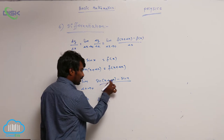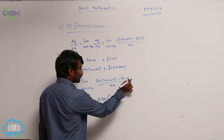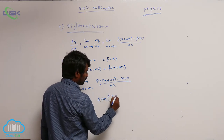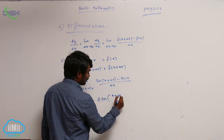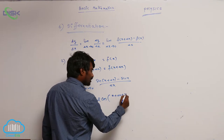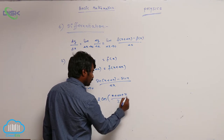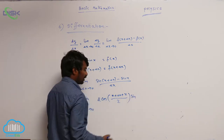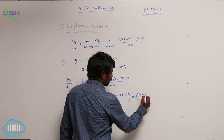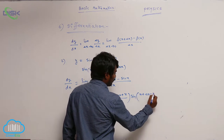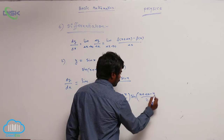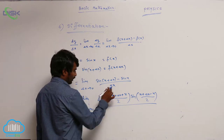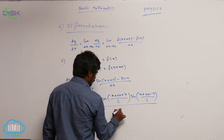This total term is C, this x is D. So C plus D by 2 is (x plus delta x plus x) by 2. And sin((C minus D)/2) gives (x plus delta x minus x) by 2, the whole divided by delta x as usual.